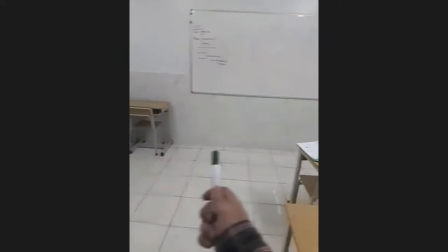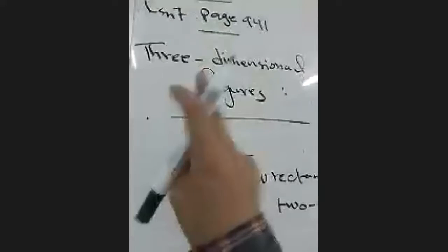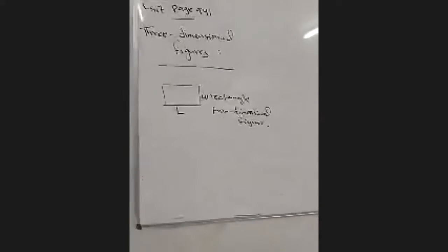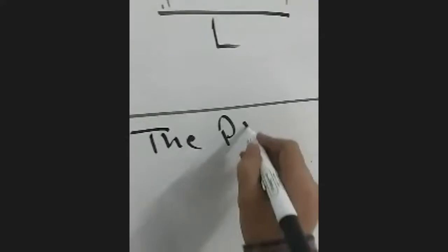Today we'll talk about three-dimensional figures. A three-dimensional figure is something like the room we are inside now. This room has three dimensions — it has length, width, and height. We call them three-dimensional figures. Today we will talk about the prism.